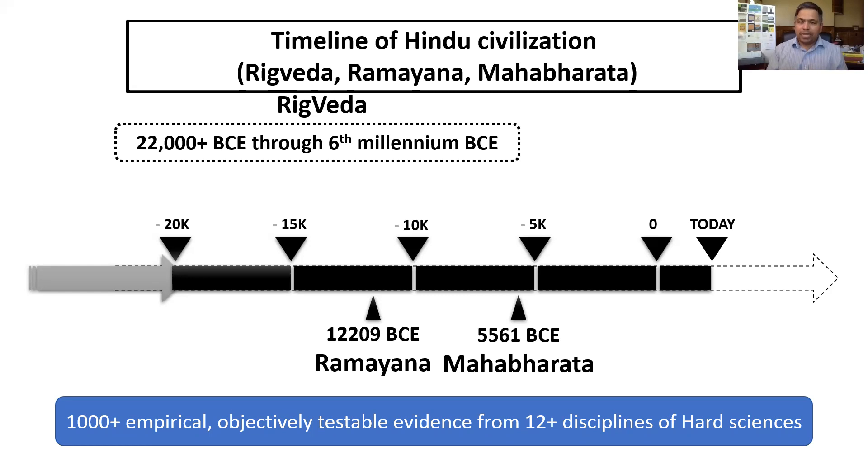The Mahabharata happened in the 6th millennium BC, 5561 BC. Ramayana occurred in 13th millennium BC, 12209 BC. And the approximate period for Rigveda runs from 6th millennium BC, the latest portions, all the way into deep antiquity.